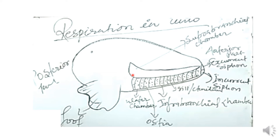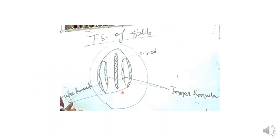Now let us see some more detailed structure of the respiratory organs of Unio. In this diagram we see the pairs of gills — there are two gills or two ctenidia present on either side of the rod. The outer gill is known as the outer lamella and the inner one is known as the inner lamella. On either side of the body of Unio we can find one pair of ctenidia or gills lying adjacent to this rod.